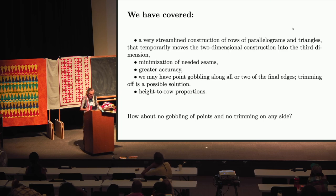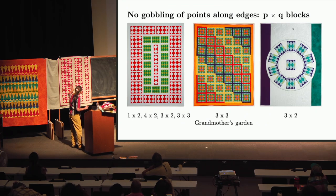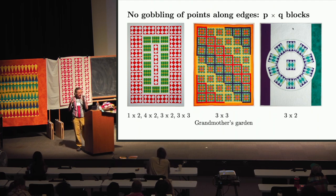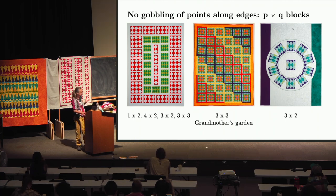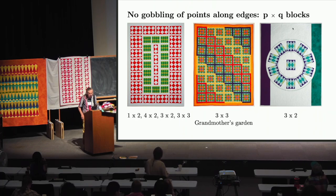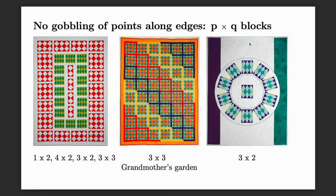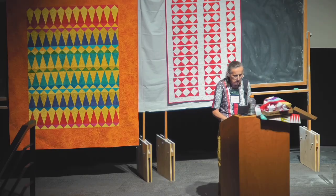For the next bit I want to talk about no gobbling of points and no trimming on any side. This is one quilt I brought here. In quilting, many blocks have traditional names — the one in the middle is called Grandmother's Garden. I call them one-by-ones, four-by-twos, three-by-twos, three-by-threes — and the same method works for all of them, so you don't need to buy instruction booklets for each. A similar method applies to what I call split p×q blocks.